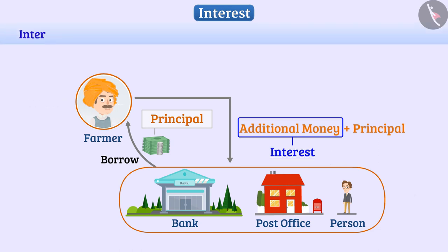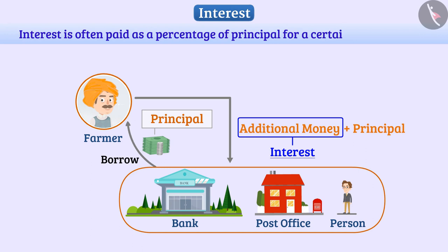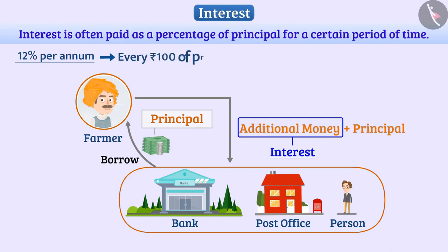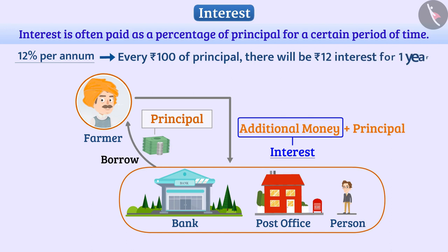Interest is often paid as a percentage of principal for a certain period of time. For example, 12% per annum means that for every Rs. 100 of principal, there will be Rs. 12 interest for one year.